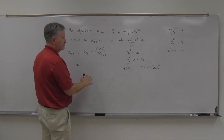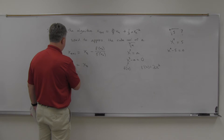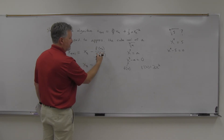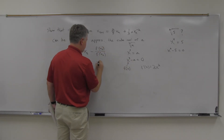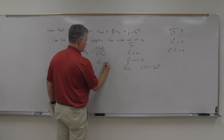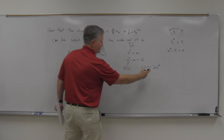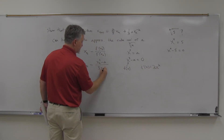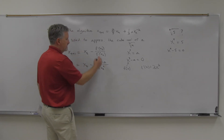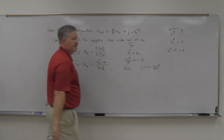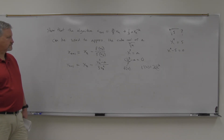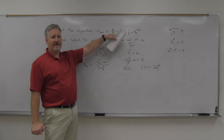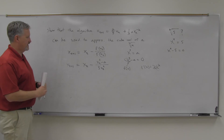Now let's plug in. x_{n+1} equals xₙ minus f(xₙ) over f'(xₙ). f(xₙ) means I plug xₙ in for x, so it's xₙ cubed minus a. f'(xₙ) means I plug xₙ in there, so it's 3xₙ squared. I just substituted xₙ in both places.